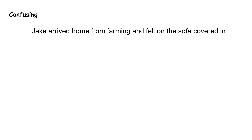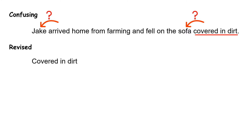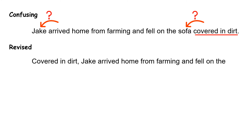Let's look at some examples. Here's a confusing sentence: Jake arrived home from farming and fell on the sofa covered in dirt. 'Covered in dirt' is the participial phrase. Is it describing the sofa? Was the sofa covered in dirt, or was Jake covered in dirt? Here's the revised version: Covered in dirt, Jake arrived home from farming and fell on the sofa. Now 'covered in dirt' is describing Jake.